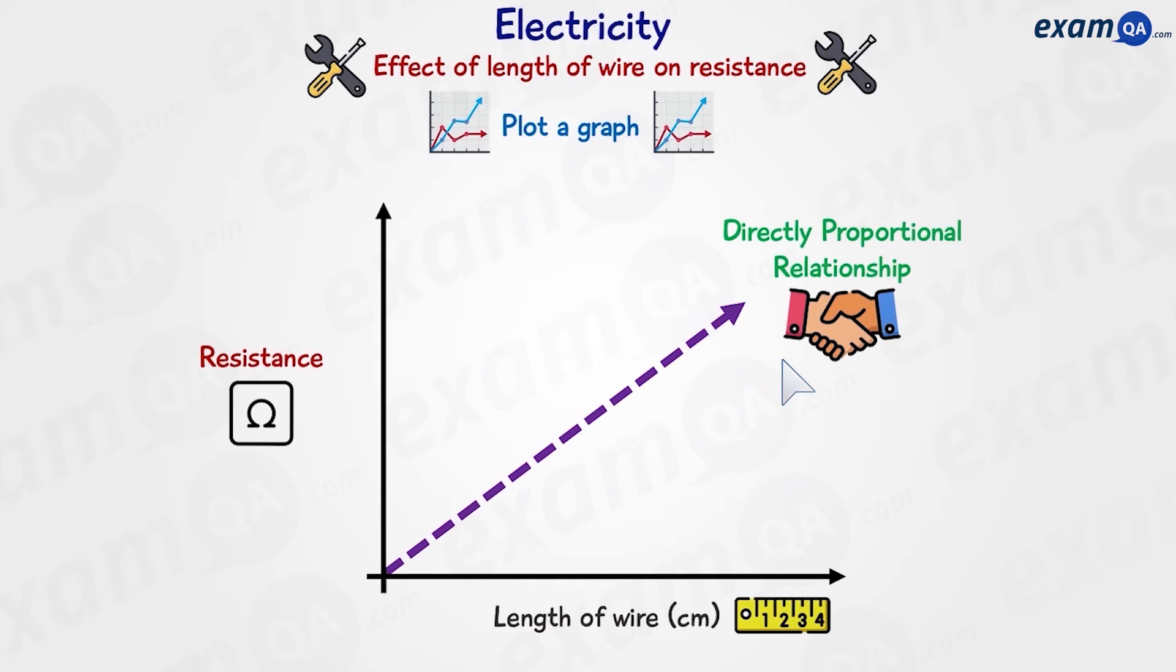This shows a directly proportional relationship between the length of wire and resistance. So this tells us that as our wire gets longer in the circuit, the resistance will increase.